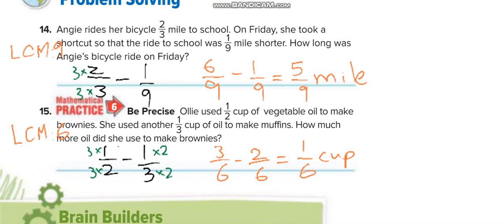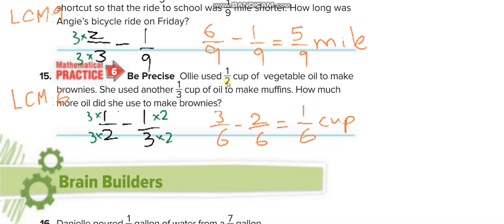Here's a word problem: Angie rides her bicycle two thirds of a mile to school. On Friday she took a shortcut, so the ride was 1 ninth of a mile shorter. We subtract 1 ninth from 2 thirds. First, make the denominators the same — the LCM of 9 and 3 is 9. We multiply the second fraction by 3, giving 6 over 9. Then 6 over 9 minus 1 over 9 equals 5 over 9. Similarly, for 1 half minus 1 third, the LCM is 6, giving 3 over 6 minus 2 over 6 equals 1 over 6.